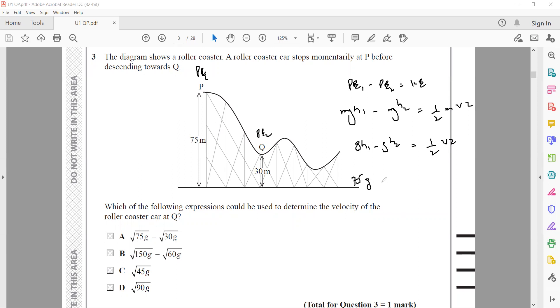M is common in all expressions so we can cancel out. It will be GH1 minus GH2 equals half V squared. So 75G minus 30G equals half V squared. 45G equals half V squared, or 90G equals V squared, so V equals square root of 90G. D is the right answer.